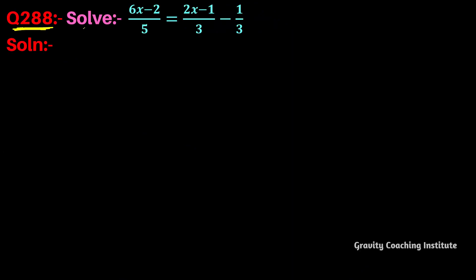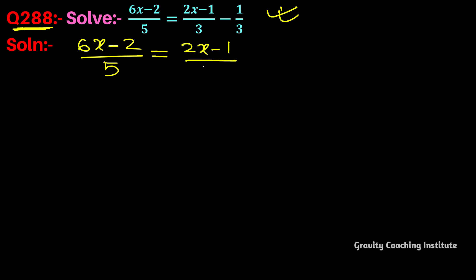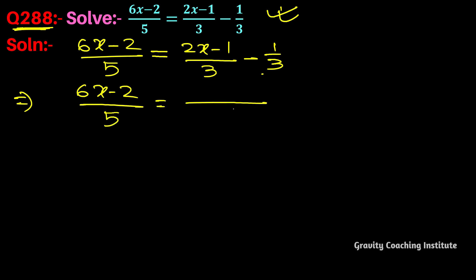Question number 288. We have (6x minus 2) upon 5 equal to (2x minus 1) upon 3 minus 1 by 3. Taking the right-hand side terms together, it will be 3.